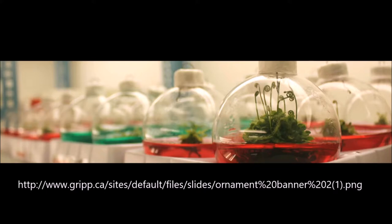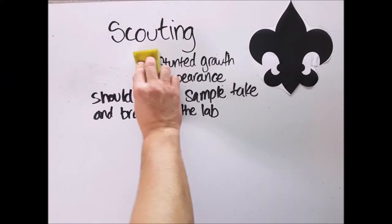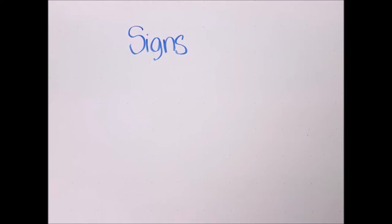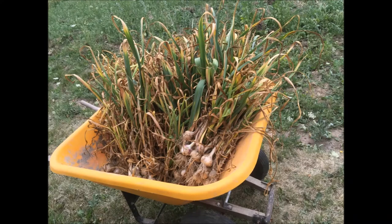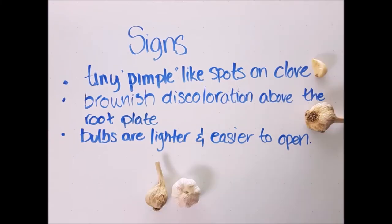Some simple tips for scouting for nematodes is looking for areas with stunted growth and early yellowing of the leaves. Signs consist of tiny pimple-like spots on the clove which can be identified after the garlic has been peeled. Bulbs tend to be lighter in weight and easier to open.